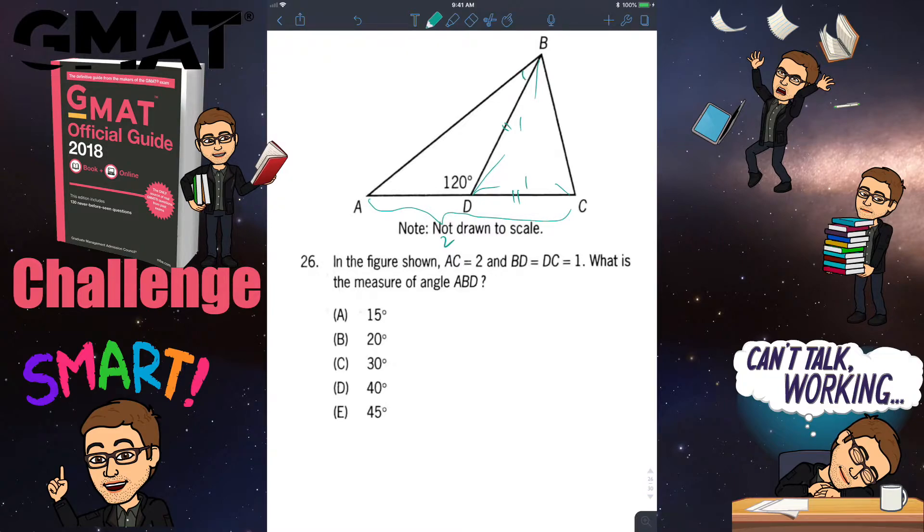And I'm gonna change the color to mark the information that I can deduce from these pieces of information. The first piece of information I can get is the length of AD. Since we know that AC is 2, DC is 1, that means AD has to be 1.